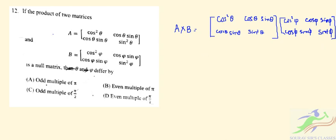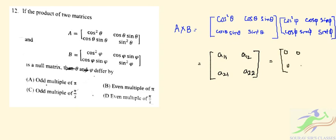After the product we will find elements a11, a12, a21, a22. This is a 2×2 matrix multiplied by a 2×2 matrix, so the result will also be a 2×2 square matrix. Since it is a null matrix, let us find the elements: a11, a12, a21, a22.